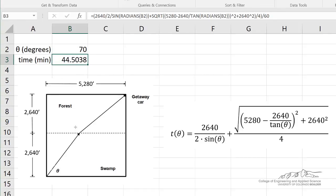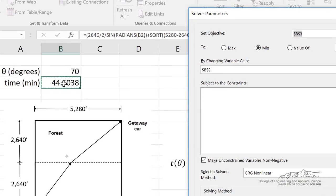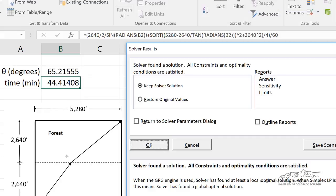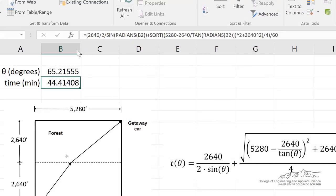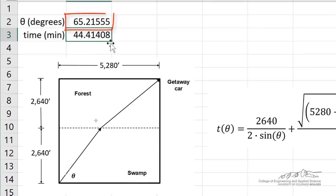We can use the solver tool. Now we're going to set the objective cell B3 to a minimum value by changing cell B2. And when I click solve, it turns through and it determines that if you go at an angle of 65 degrees, that's going to get you to the getaway car the fastest after about 44.4 minutes.